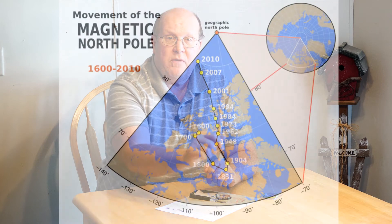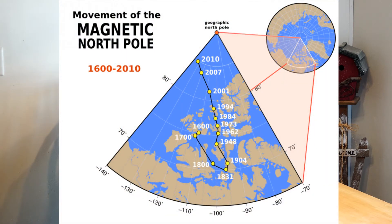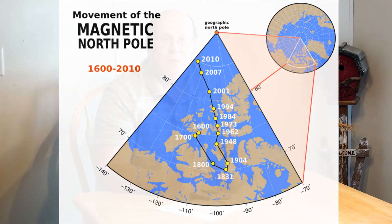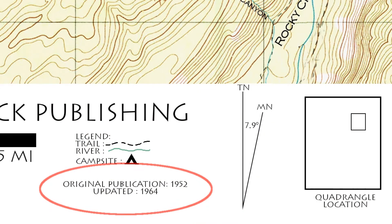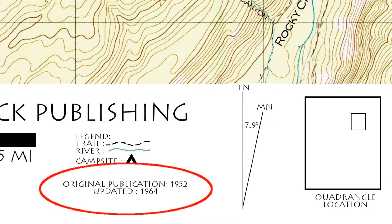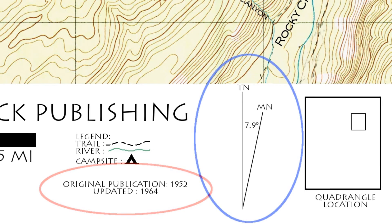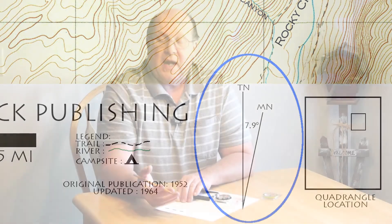One other thing I want to point out is that the magnetic north your compass points to is not always in the same place — it is constantly moving around. Right now it's heading almost in a straight line, but in years past it has gone all over the board. So it's very important to know that magnetic north is moving. The older your map is, the more inaccurate the declination printed on it could be. This map says 7.9 degrees — it may be 5.1 or 9.6 today.